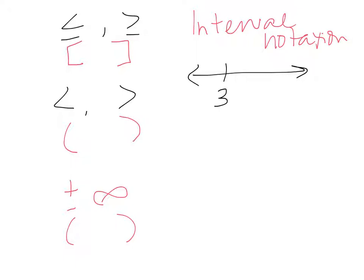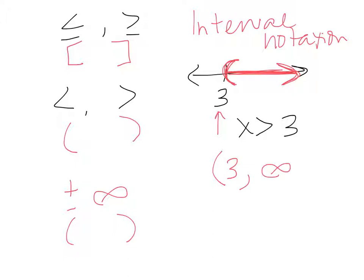Let's say I have x is greater than 3. That means I'm going to shade to the right because I want the values that are greater, and because it's just a greater than symbol, I'm going to put a parenthesis. So interval notation is a direct translation — I have a parenthesis on the 3, comma, and I'm going to the right forever, so that takes us to infinity. The interval notation for this is (3, infinity).